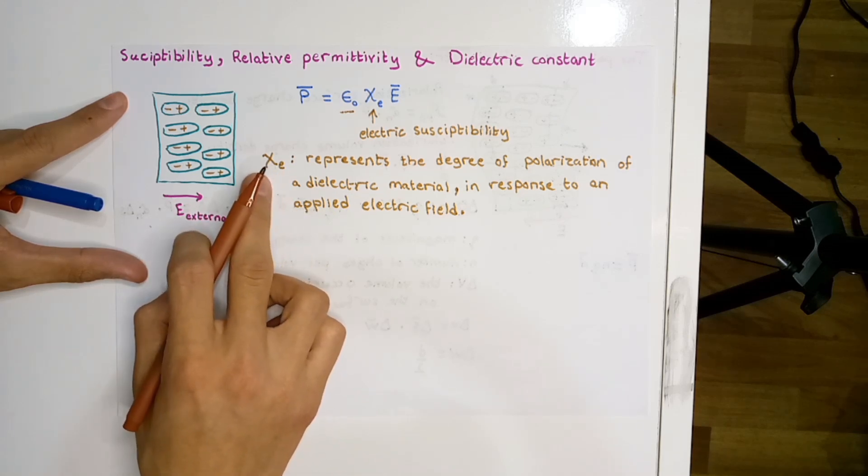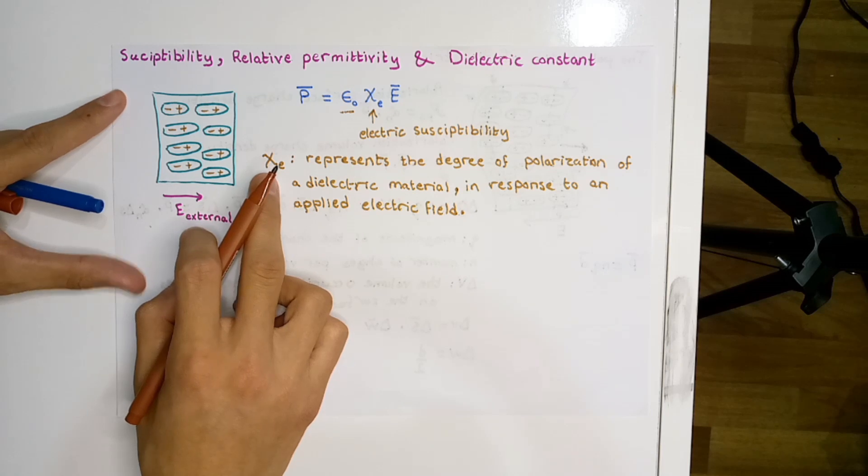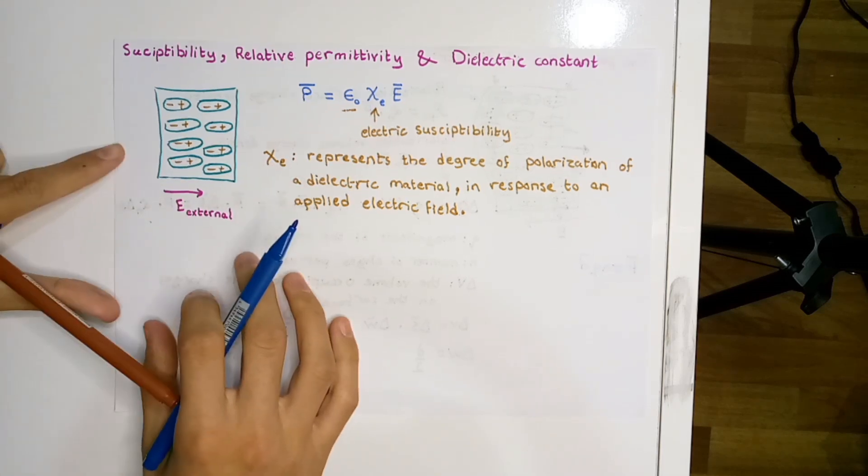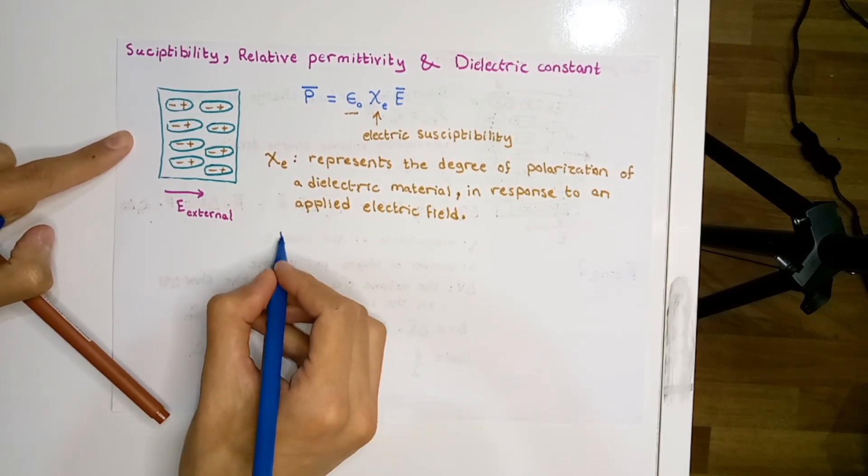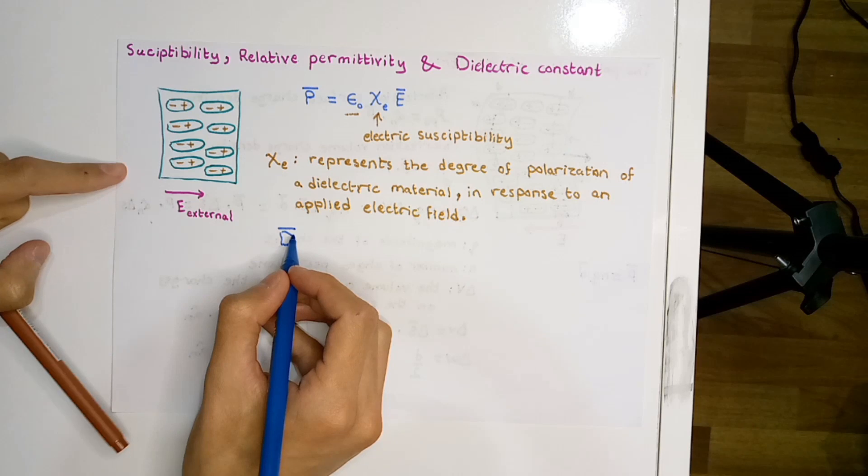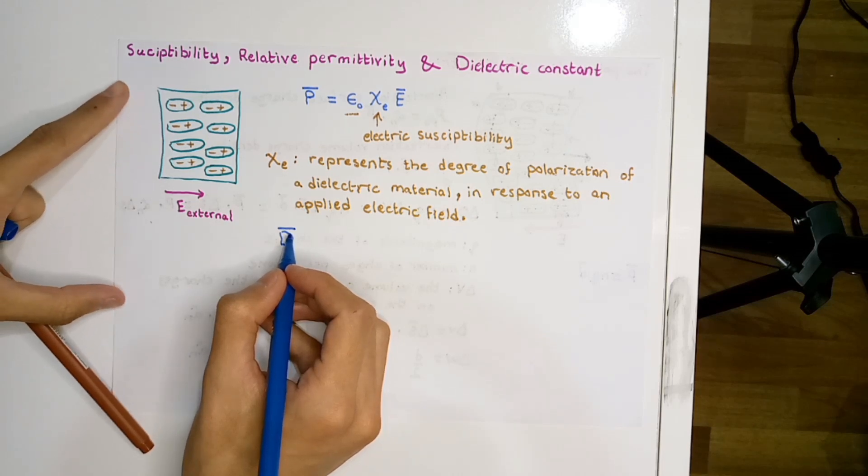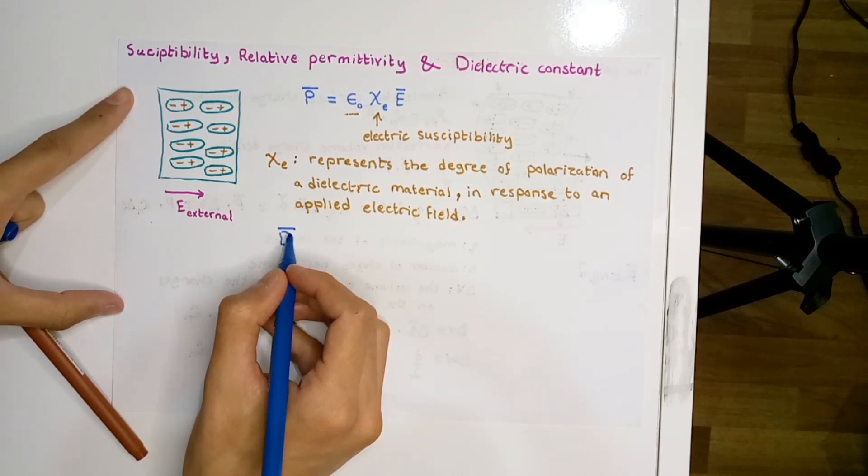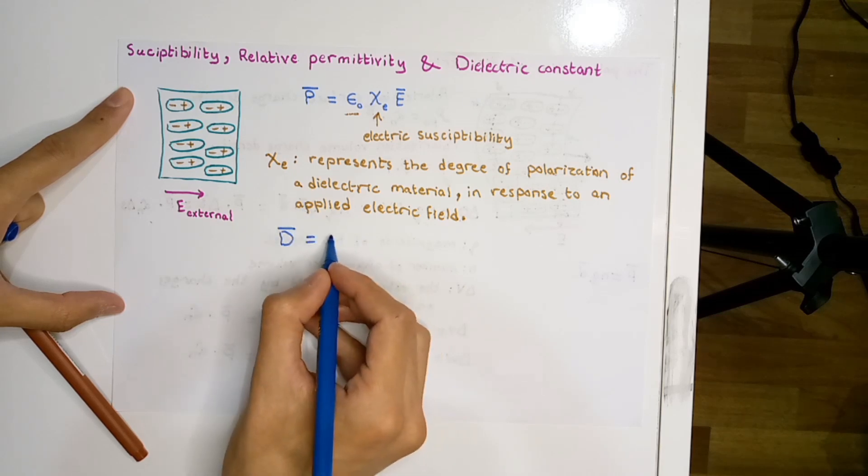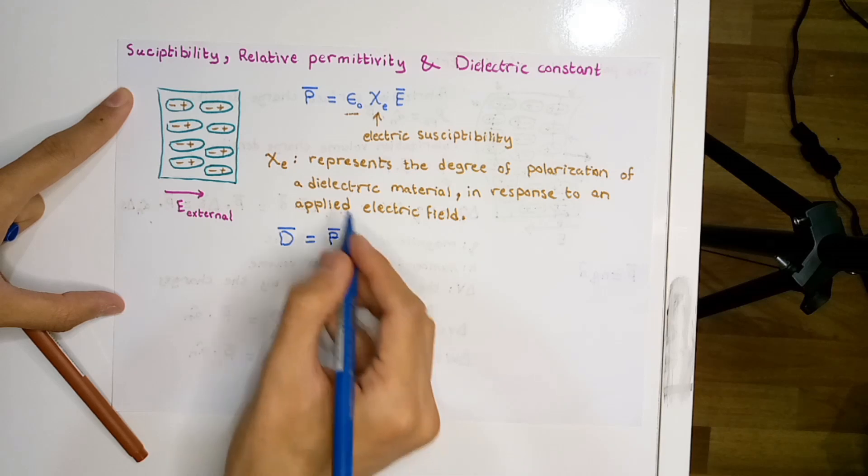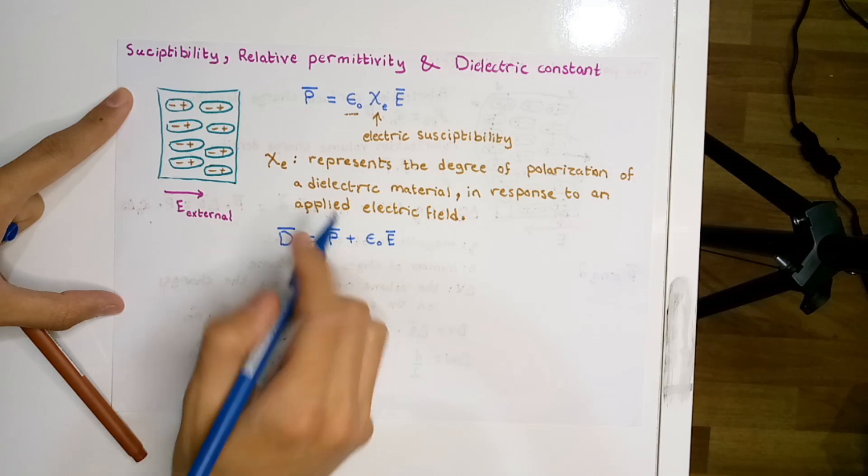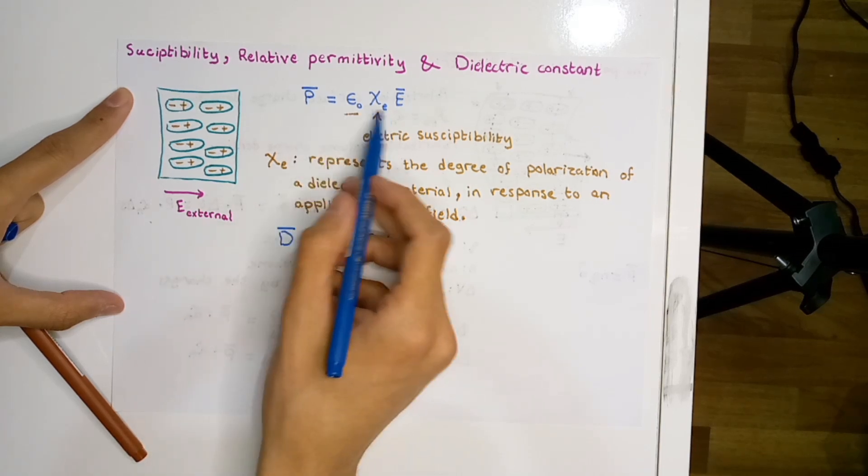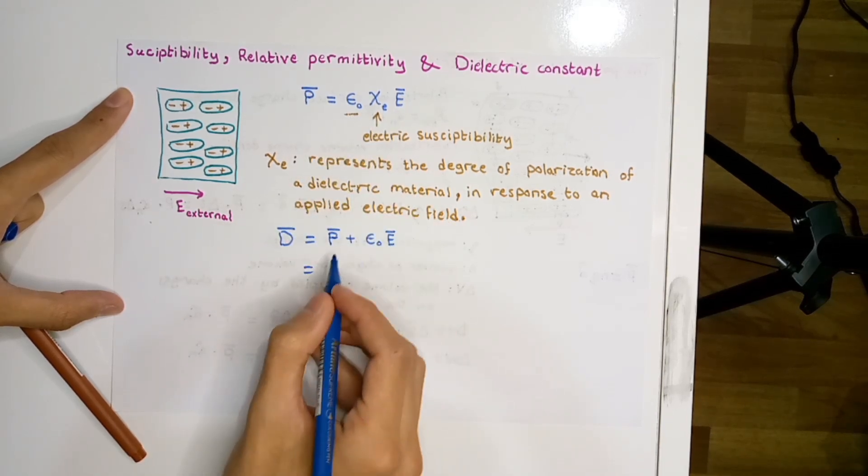Anyways, when we talk about dielectrics, usually we invoke the concept of the electric displacement, or what we call by D vector, the electric flux density. We know it's equal to the summation of the polarization and the product between the permittivity and the electric field. Now substitute the right-hand side of this equation for P in this equation.